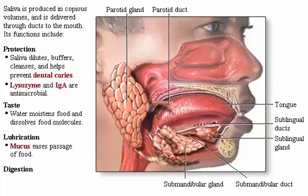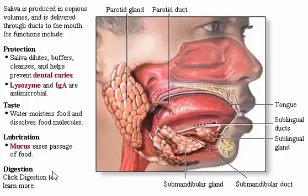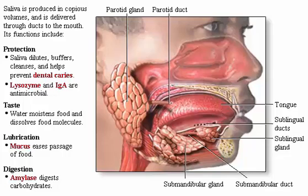Mucus lubricates food particles, making them easier to swallow. Chemical digestion occurs in aqueous solutions. Saliva contains the digestive enzyme amylase that begins the digestion of starch in the mouth. Intrinsic salivary glands on the tongue release lingual lipase, which is optimally active at an acidic pH and may digest some triglycerides in the stomach.